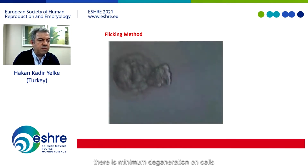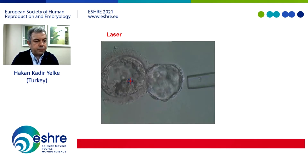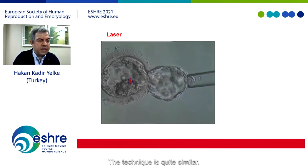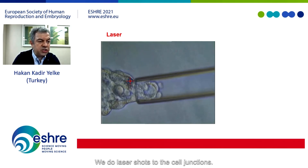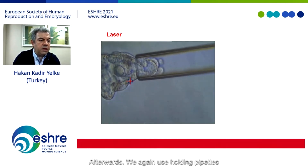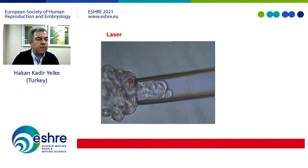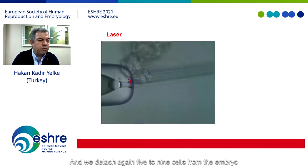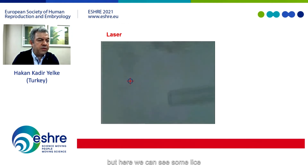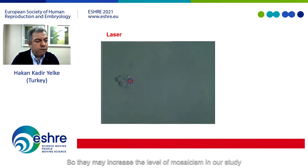As seen, there is minimum degeneration on cells. But when we use laser, the technique is quite similar — again we take five to nine cells. We do laser shots to the cell junctions, then again use the holding pipette to squeeze those cells and flick down firmly to detach five to nine cells from the embryo. Here we can see some lysis and/or degeneration on the cells, which may increase the level of mosaicism.